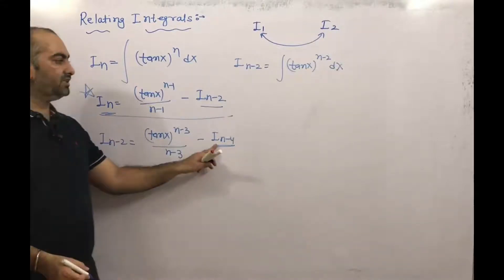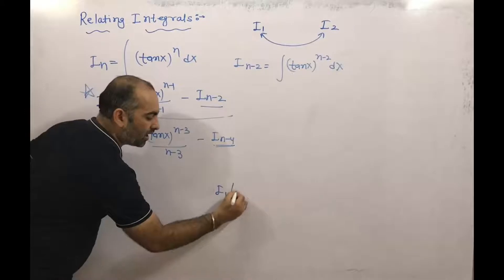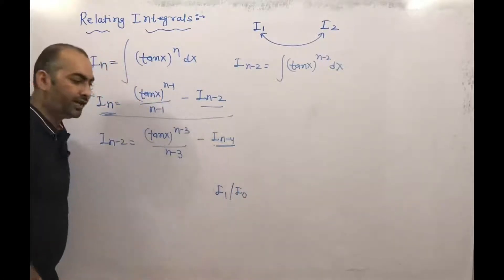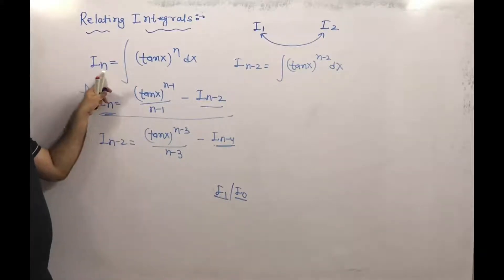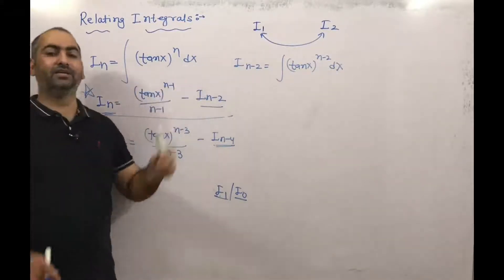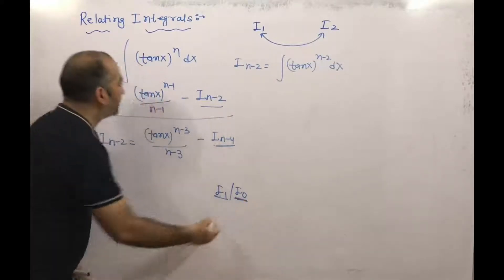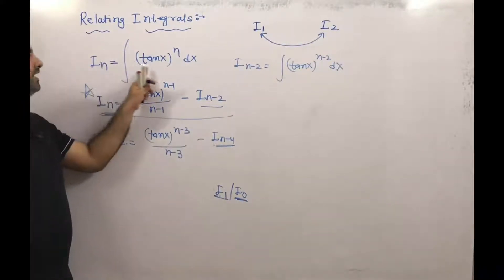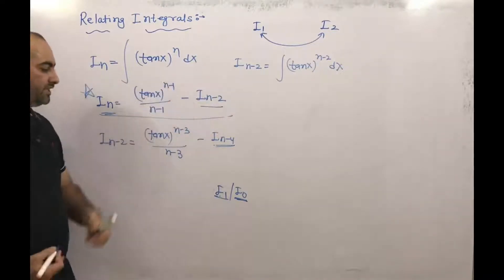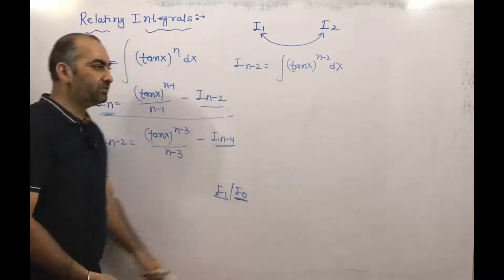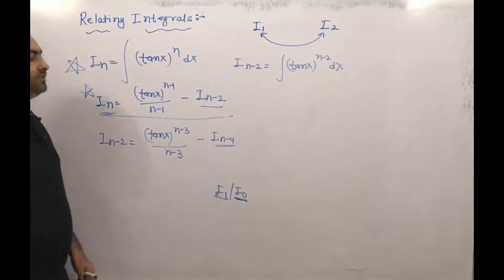This continues until we reach either I1 or I0, both of which we know. I1 equals the integral of tan(x) dx, which we know. And I0 equals the integral of tan(x)^0 dx, which is just the integral of dx — also known. So this integration was discussed in indefinite integration using relating integrals.